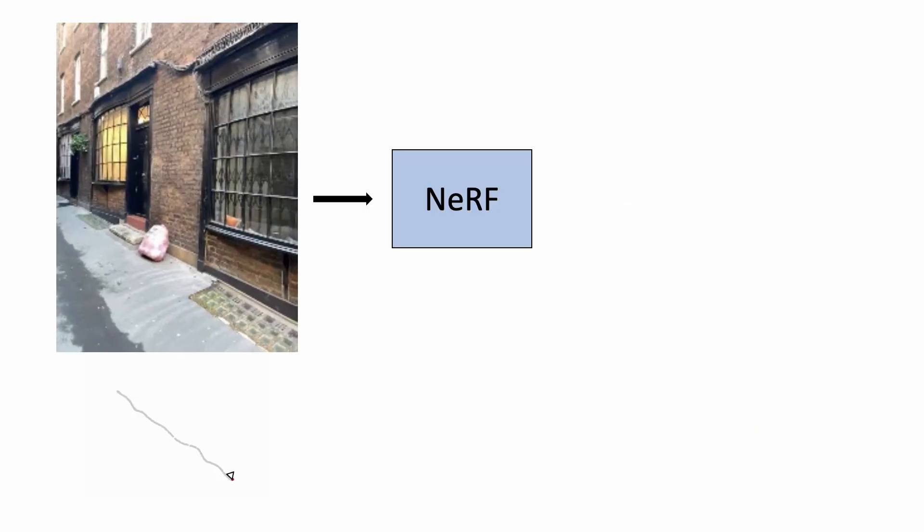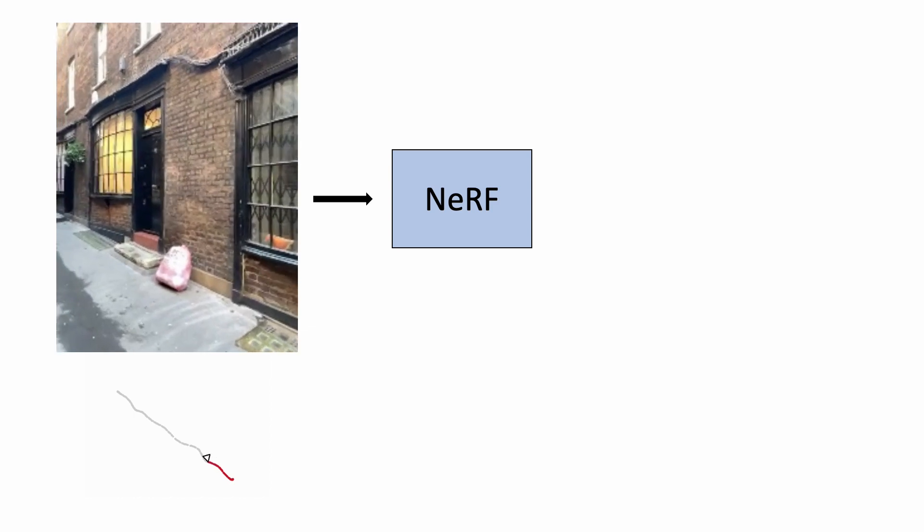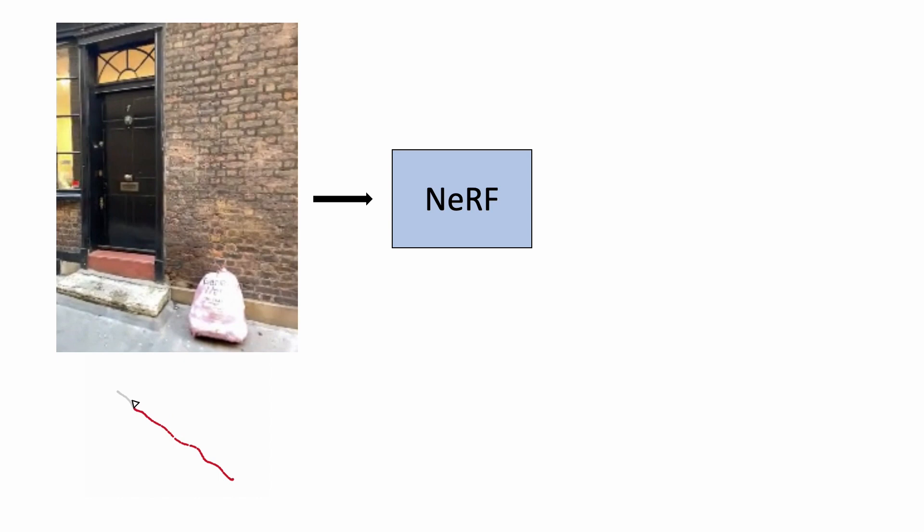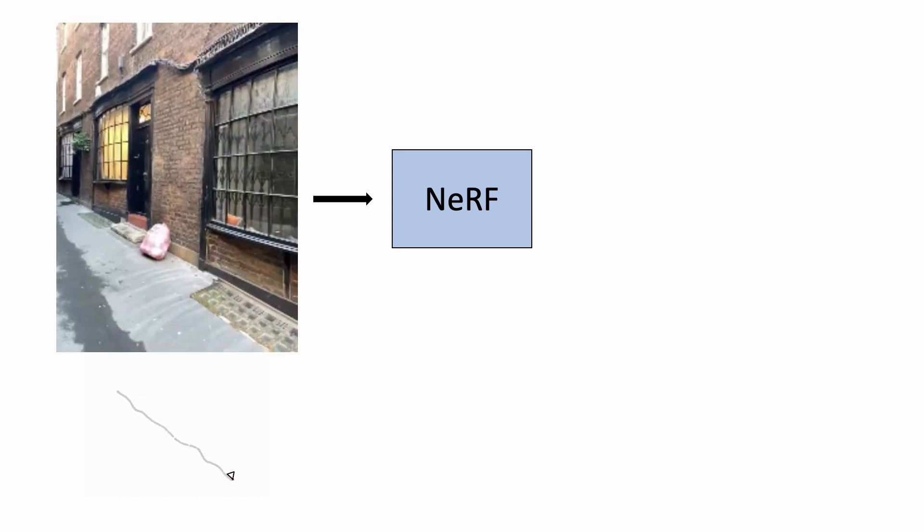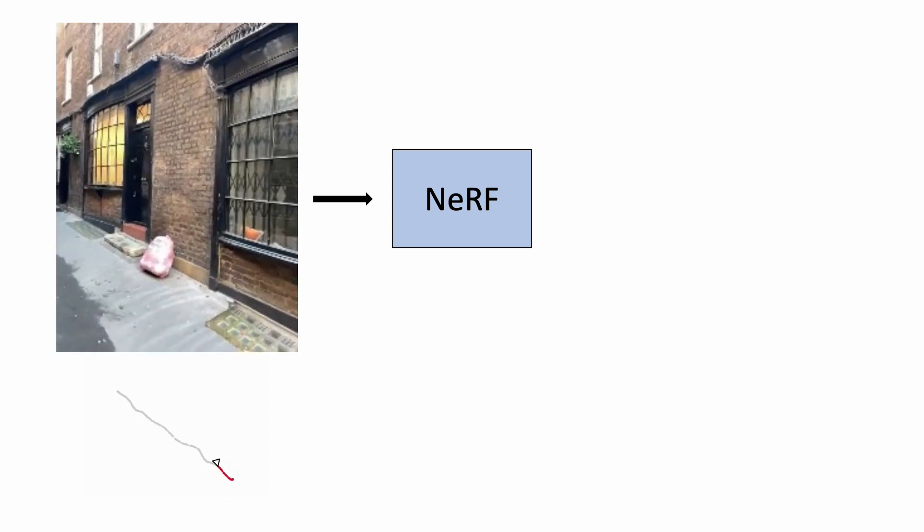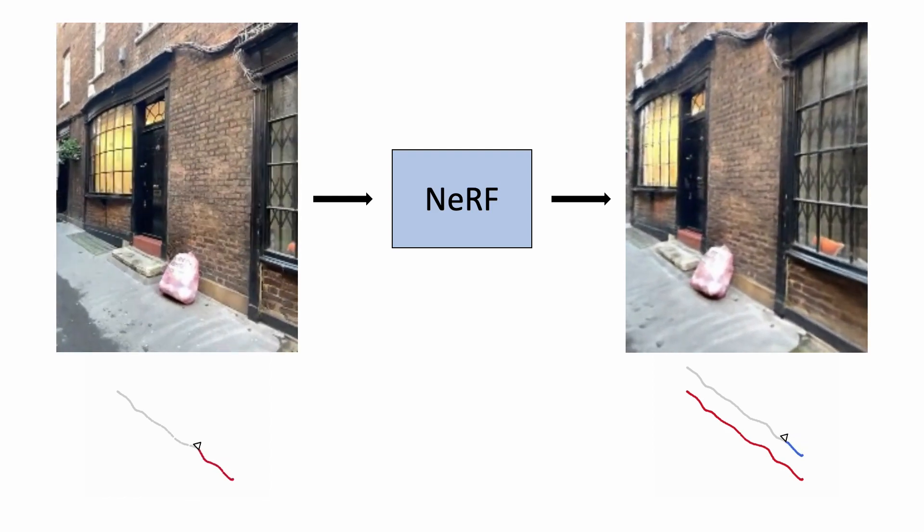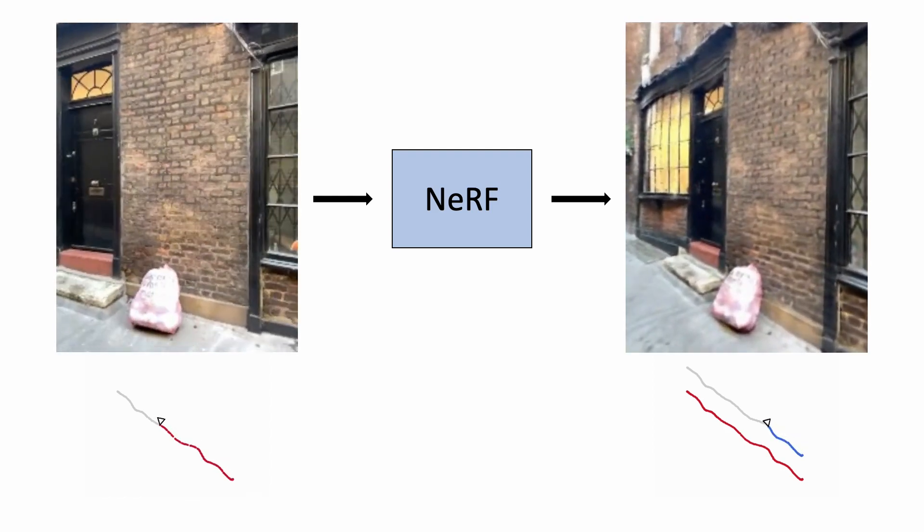Neural radiance fields, or NeRFs, are a popular novel view synthesis method. They take as input an unordered collection of photos or video sequence like this and can be used to produce beautiful photorealistic renderings from new viewpoints like this one.